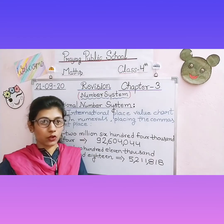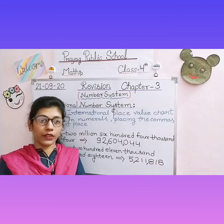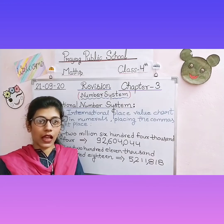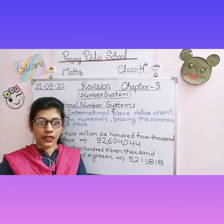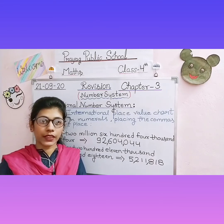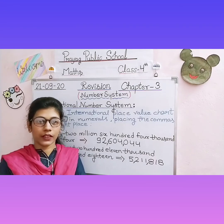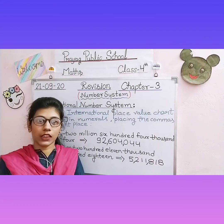So students, that's all for today. Do the given questions in your homework copy very carefully with neat and clean handwriting. Your classwork is to draw the International Place Value Chart in your homework copy. First mention the date, subject, and heading 'International Place Value Chart'. Then bend your copy horizontal and draw the chart very carefully using a scale — neat and clean. Thank you.